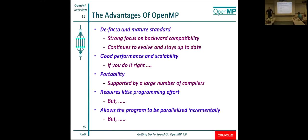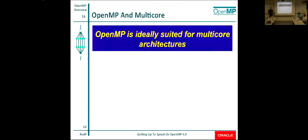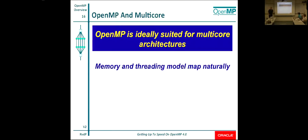Portability is a key advantage. The programming effort is fairly modest, and you can do it step by step. You tackle a small part of your program, and there it works — that part is fast. It's a very gradual model instead of all-or-nothing. OpenMP, although never designed for multi-core systems — there were no multi-core systems at the time — was targeting SMPs. But a multi-core is like a small-scale SMP from the old days, so everything maps very naturally. The memory model and threading model are pretty lightweight.